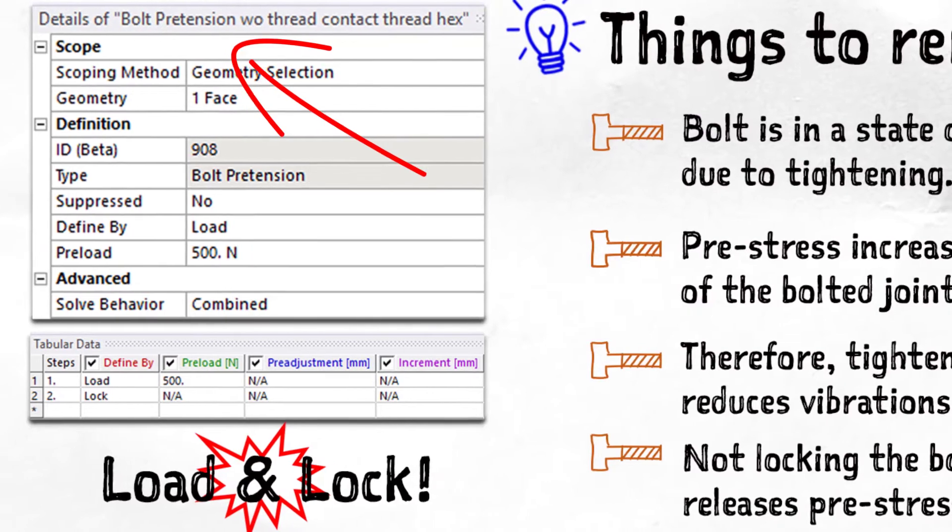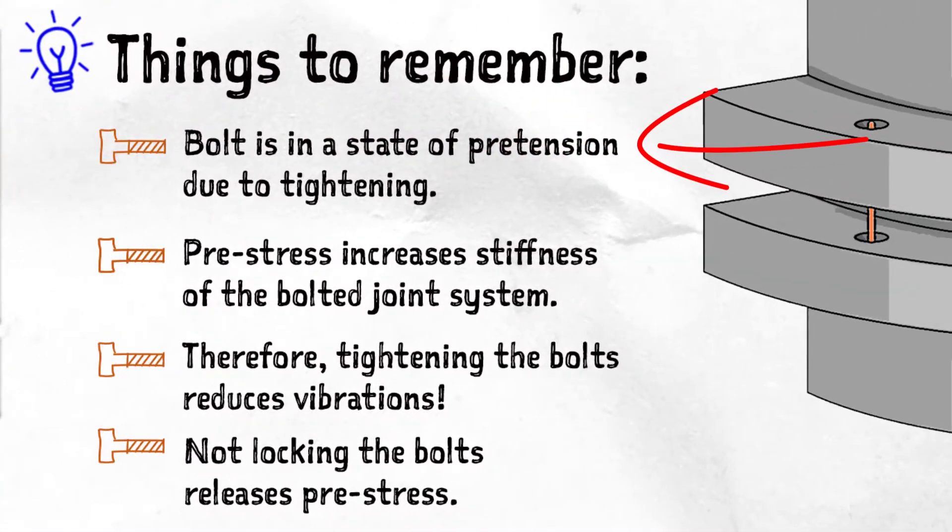A few things to remember. Under pre-load, the bolt is in a state of pre-stress and this increases the overall stiffness of the assembly. In fact, this is the reason why tightening the bolts reduces the vibration in the machinery.